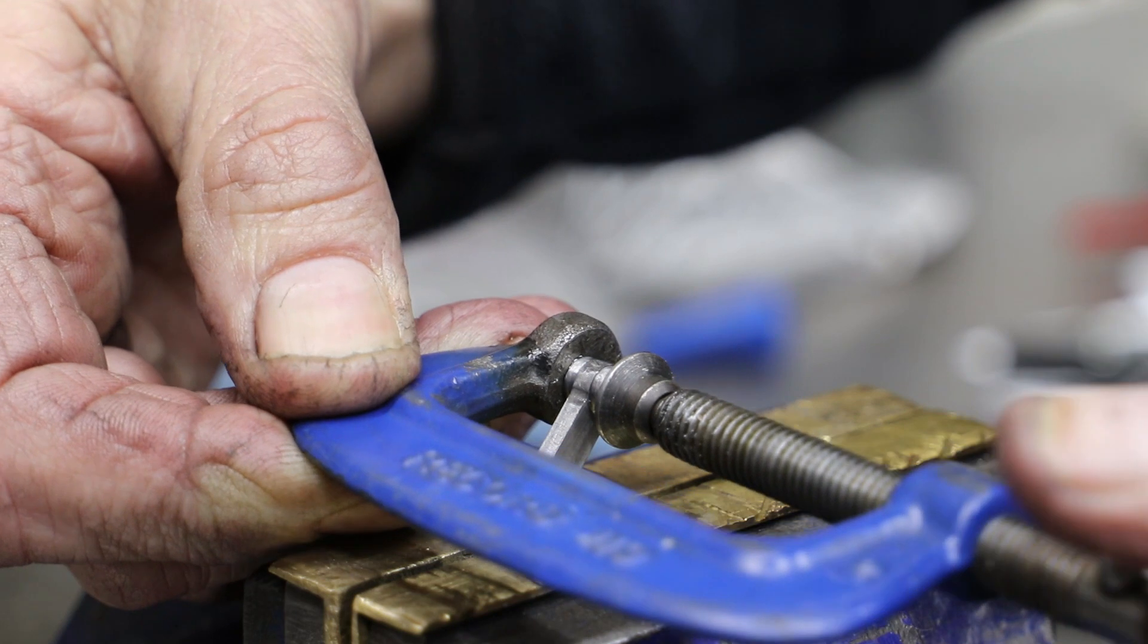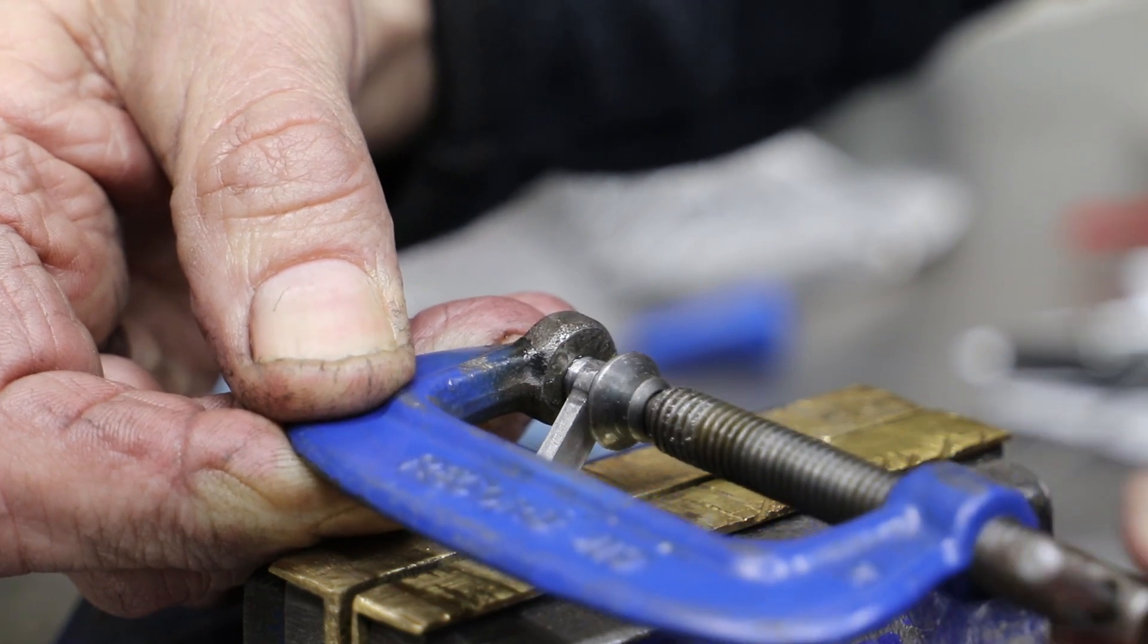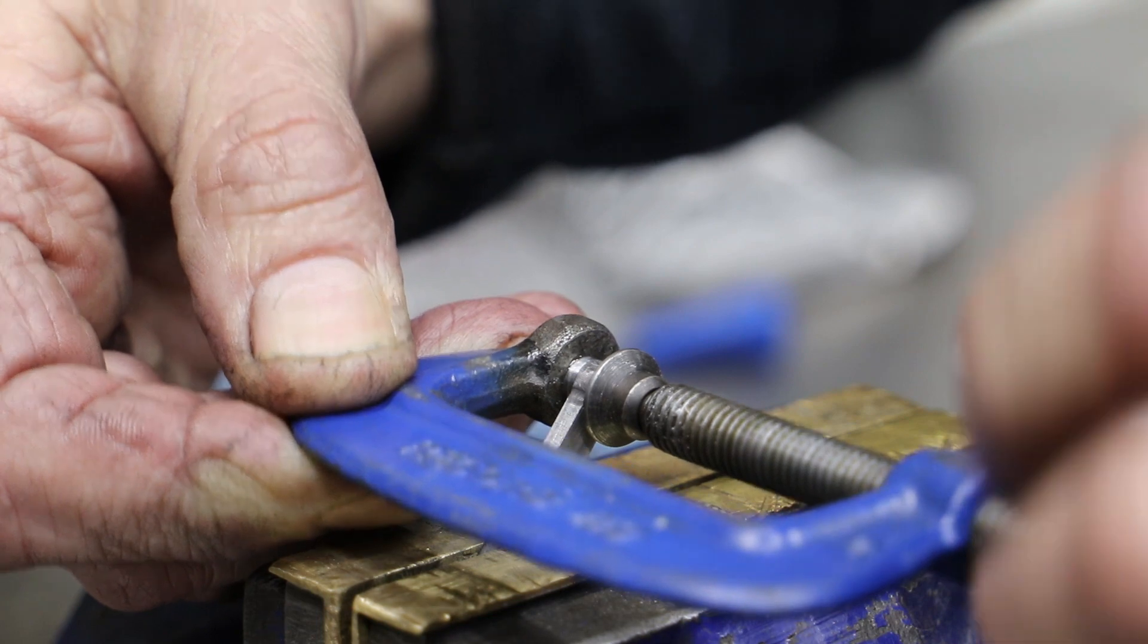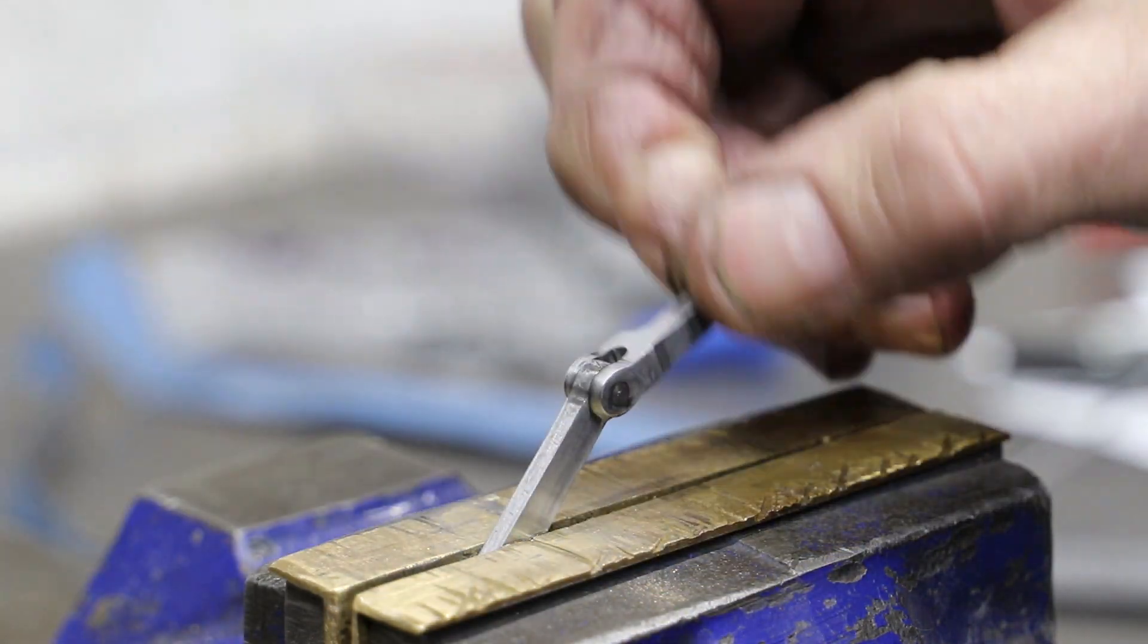I think it would be rather naive of me to think I won't need to split these joints at some point in the near future. If I use 648, it takes a lot more heat to break down.